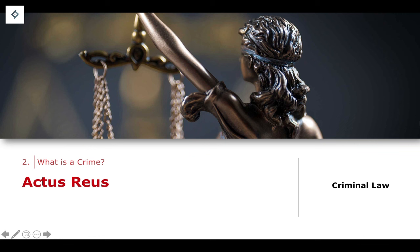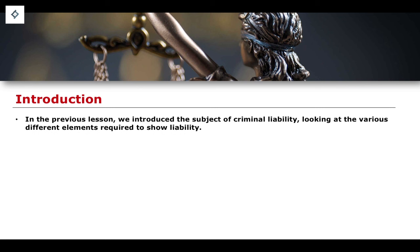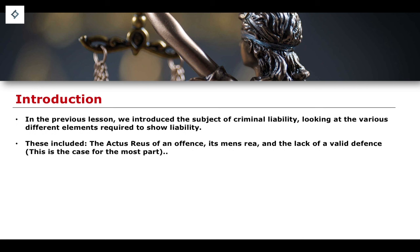Welcome back everybody to Criminal Law. In this lesson we're continuing talking about the elements of criminal liability, focusing now in more detail on the idea of Actus Reus, the first of the major elements — the idea of a guilty act. We're going to explore a number of different issues pertaining to Actus Reus within this lesson, picking up on what we did in the previous lesson, which was introducing the subject of criminal liability, looking at the various elements of a crime which are required to show liability.